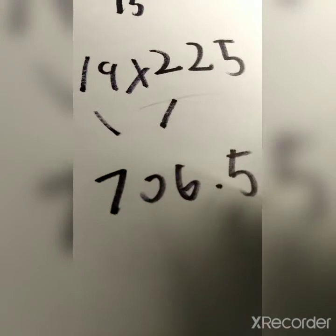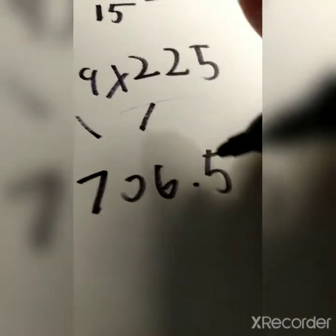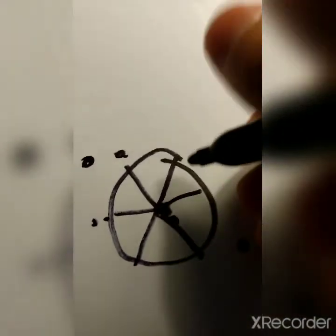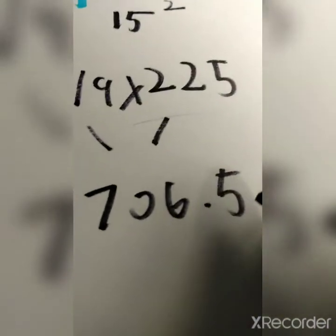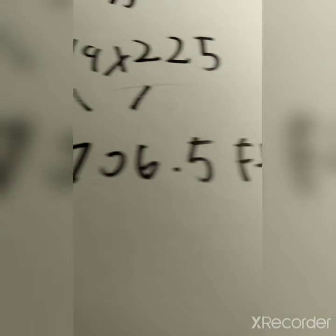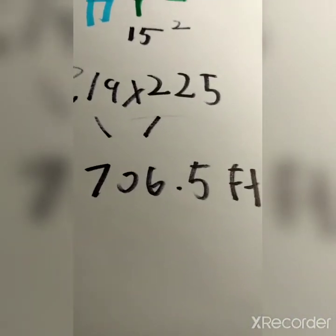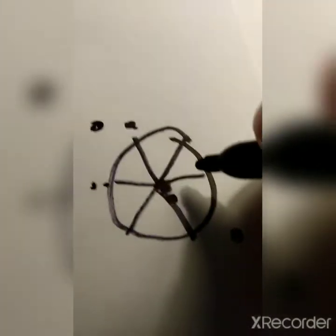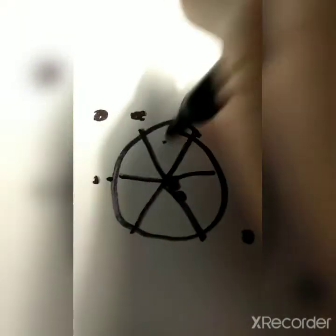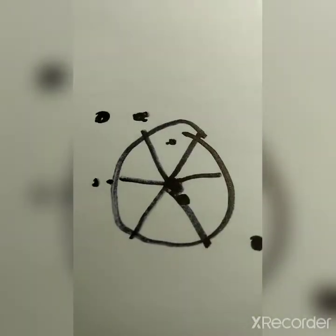But 706.5 what? That's when we have to label our answer. A circle is a 2D shape, so therefore we're going to say 706.5 feet squared. Squidward's circle is 706.5 feet squared, so SpongeBob cannot enter Squidward's circle or he will go to jail.